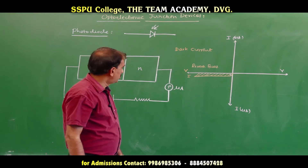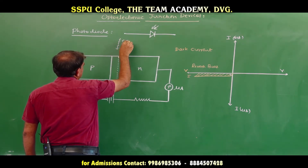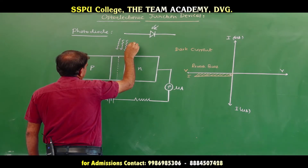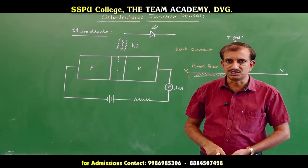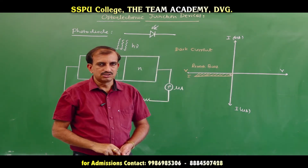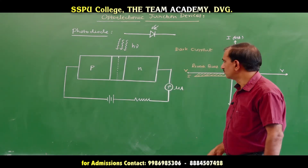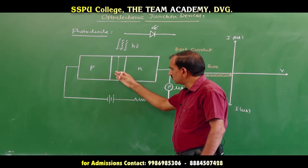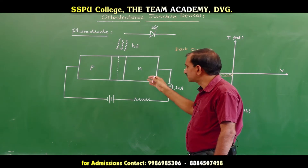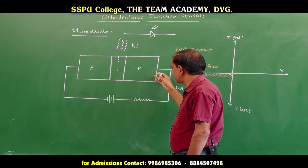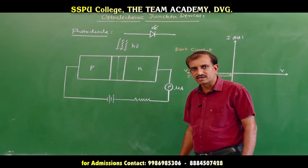Now, when radiation of energy hν is incident on the depletion layer, electron-hole pairs are created. These electron-hole pairs are separated by the electric field: electrons move towards the N region and holes move towards the P region. Electrons flow through the N-type material and holes flow through the P-type material, producing a small current in the photodiode.